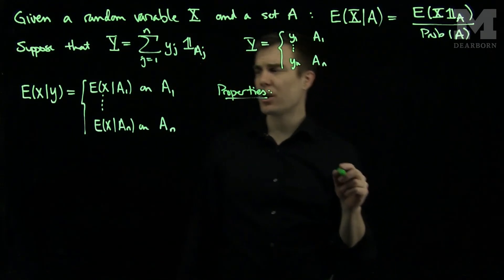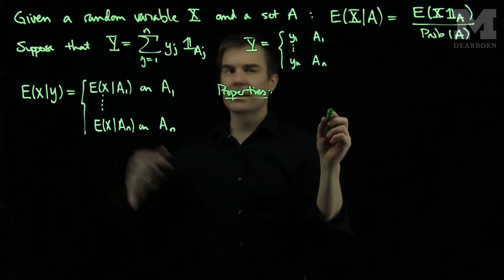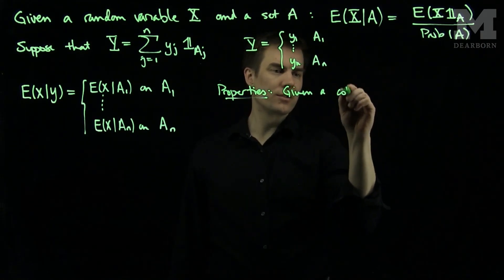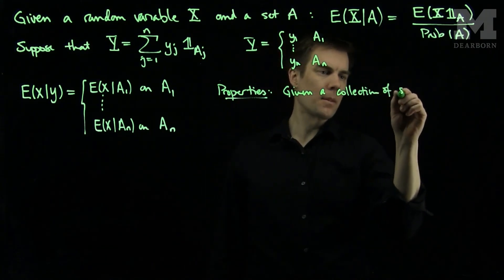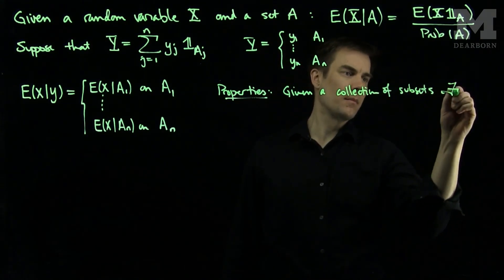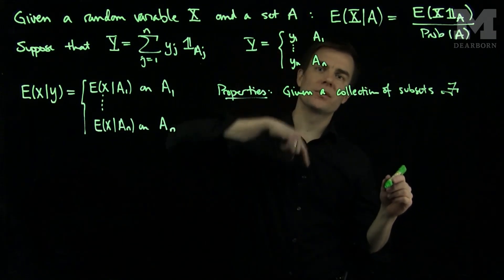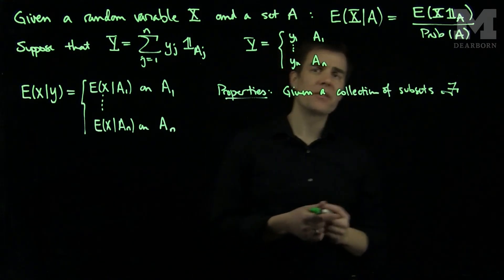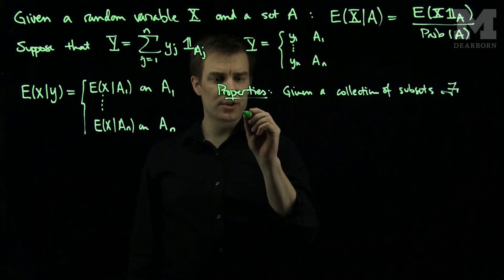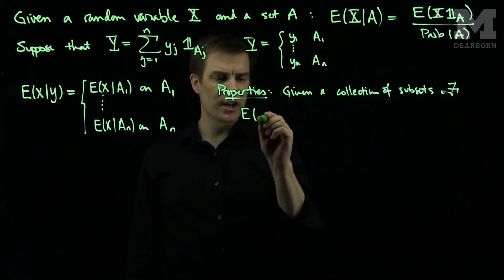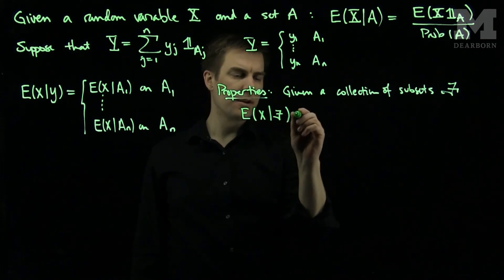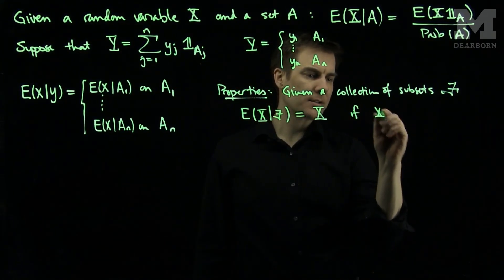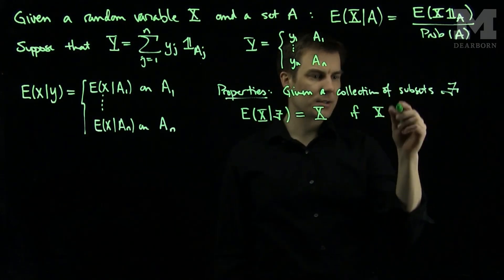The properties of conditional expectation are the following. The first property: given a collection of subsets F — for example, in terms of Y, the collection of subsets would be A1 through An — if I'm given any collection of subsets F, the conditional expectation has the following properties.